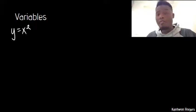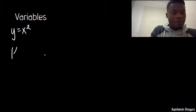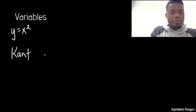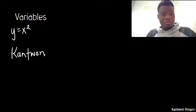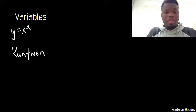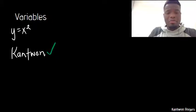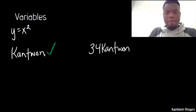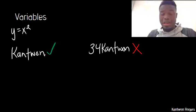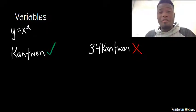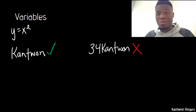The first rule is that all variable names have to start with a letter. So if I wanted to create a variable called 'canton', that's a valid variable name because it starts with a letter. If I wanted to have a variable called '34canton', that is not valid because it starts with a number. All variable names have to start with a letter — that includes not starting with numbers and not starting with any special characters either.